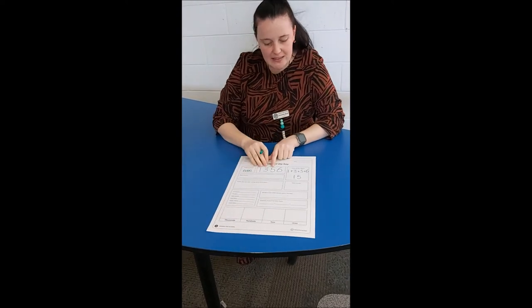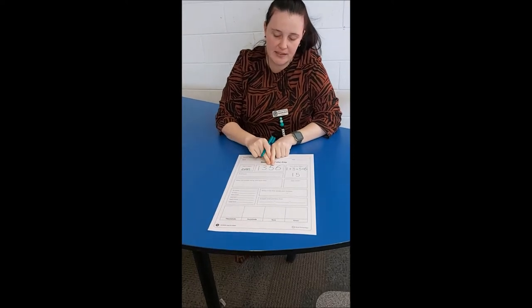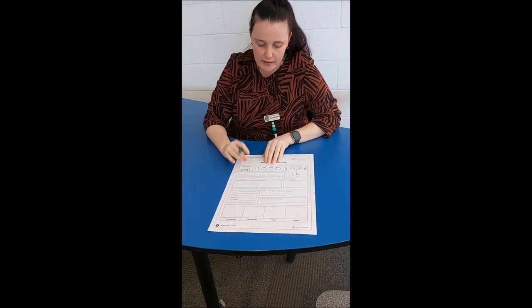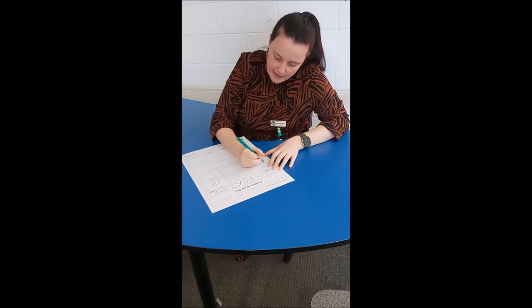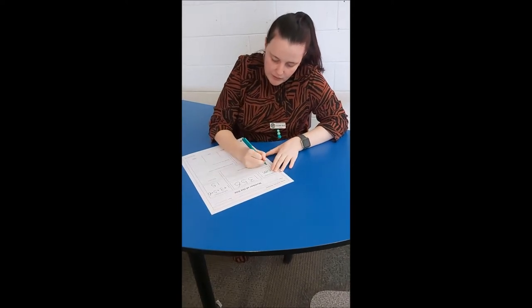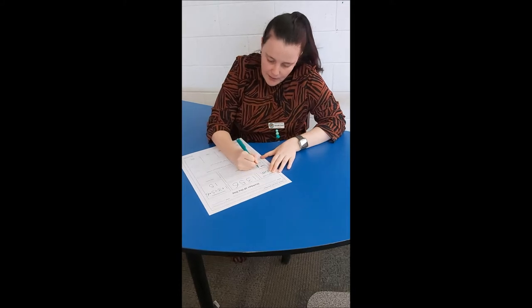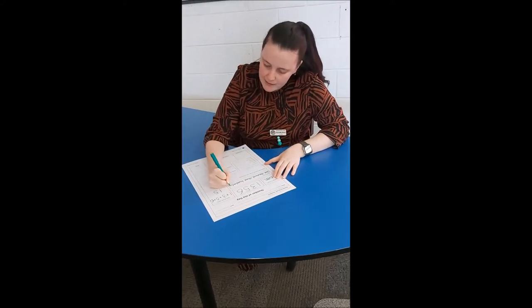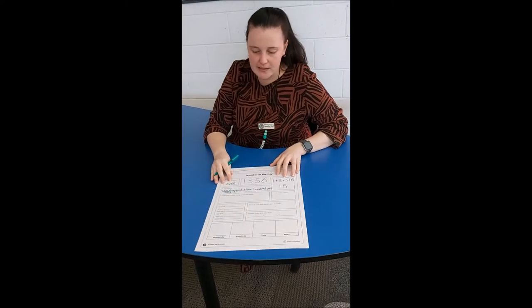Now my job, still on this same number — everything we do is based on this number — is to write it in words. My number is 1,356, so I'm going to write: one thousand, three hundred and fifty-six. I've written it exactly the way I would say it.